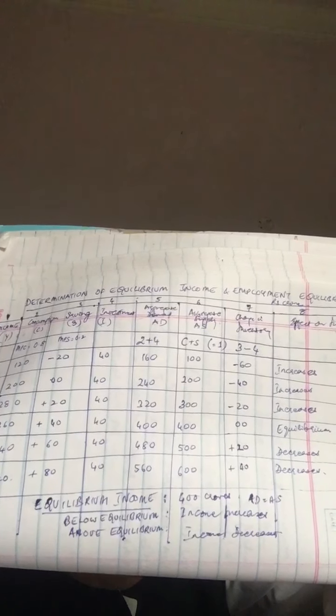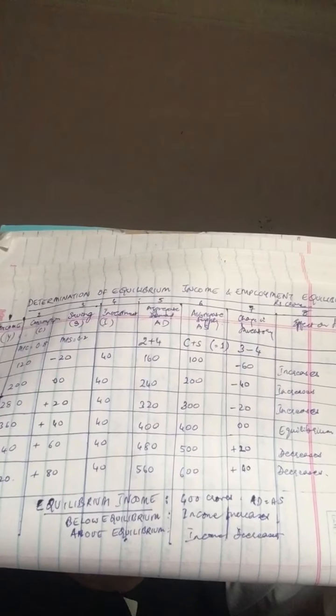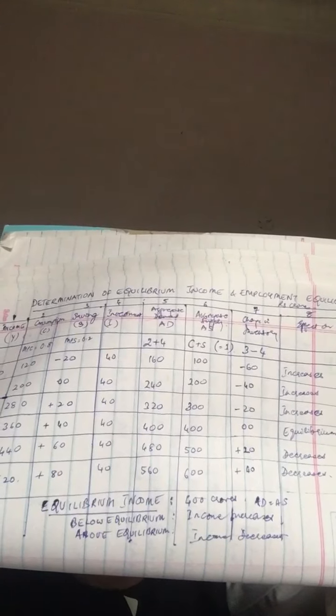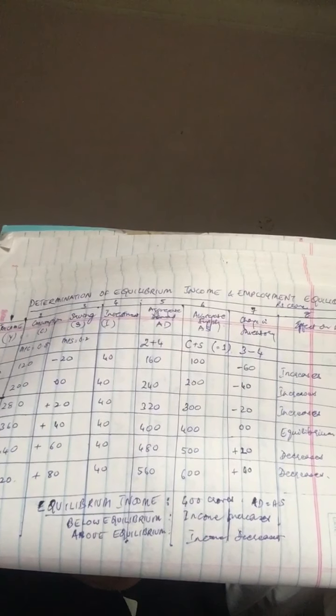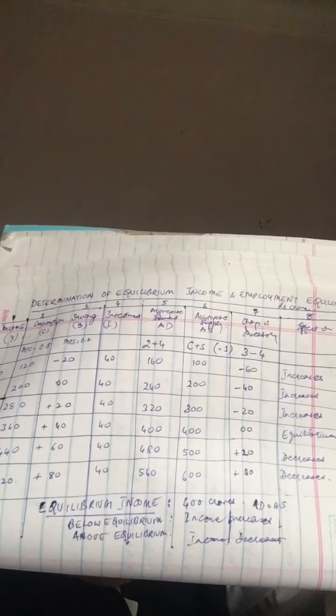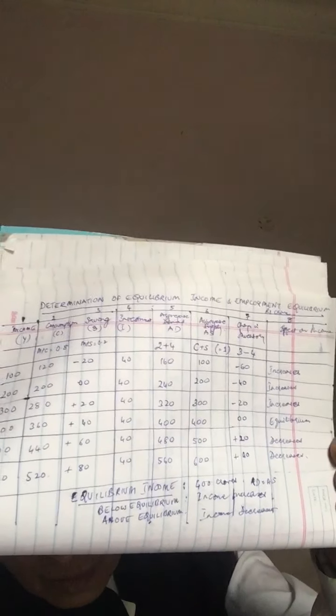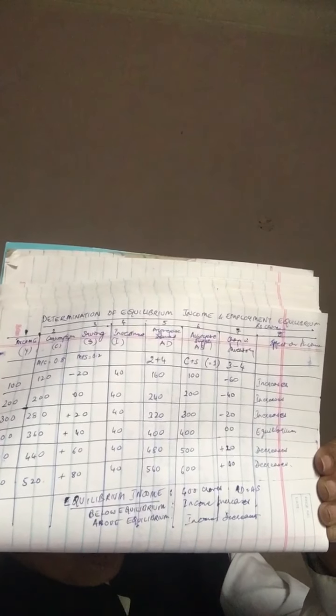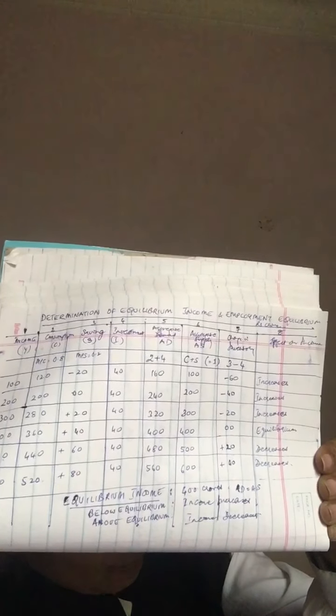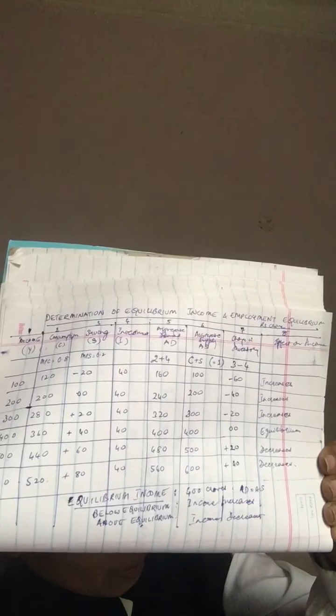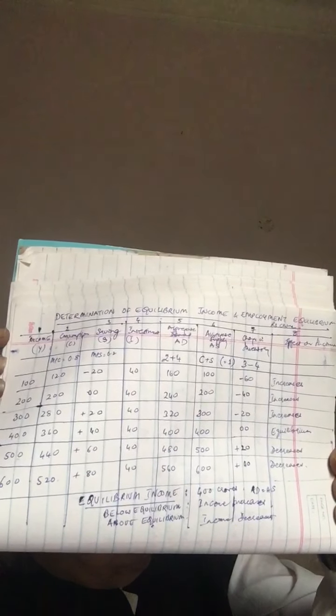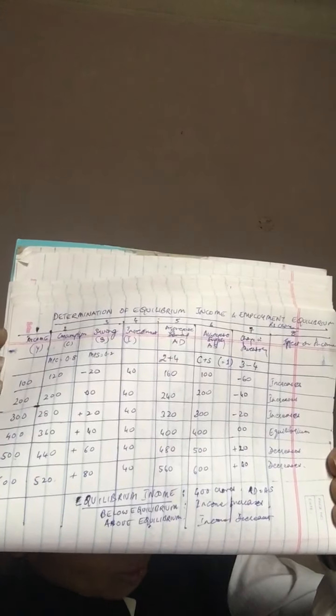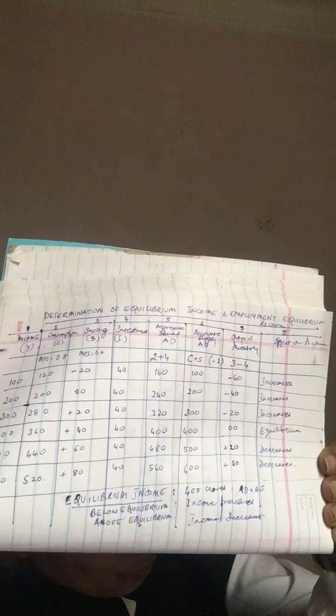At income levels below rupees 400 there is a tendency for the income to increase. At the levels below rupees 400 crore the tendency is to decrease. So that is basically what the table tells us. It explains the C plus I and you'll notice that C plus S is equal to income. So column number one, the income column, is equal to income.